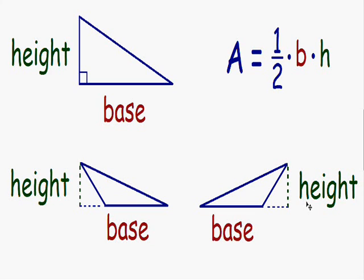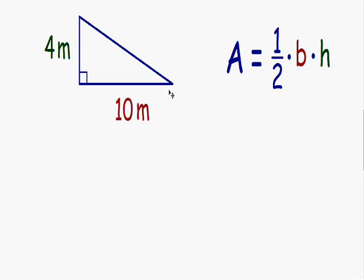Here we have a right triangle with one side with a length of 10 meters and another side with a length of 4 meters. The first thing I'm going to do is find the length of the base. I always pick the base to be the bottom side of the triangle, and since the bottom side has a length of 10 meters, my base is going to equal 10 meters.